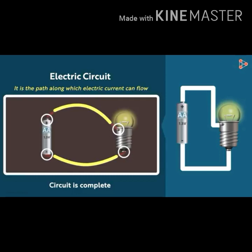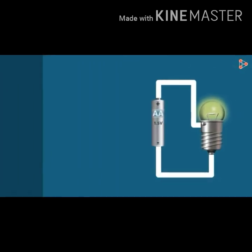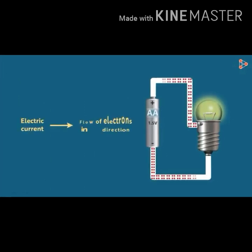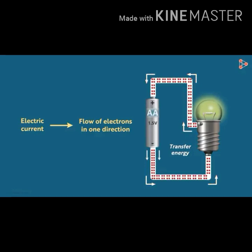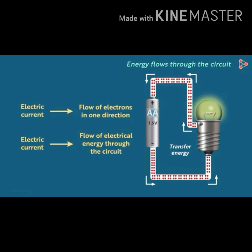Electric current is a flow of electrons in one direction. What really happens is that the negative terminal of the cell repels the electrons in the copper wire near it. These electrons drift away, but in the process they repel their neighboring electrons — transferring energy to them. Those neighbors then push their neighbors, and this process continues so that energy flows throughout the circuit. This flow of energy is nothing but electric current.